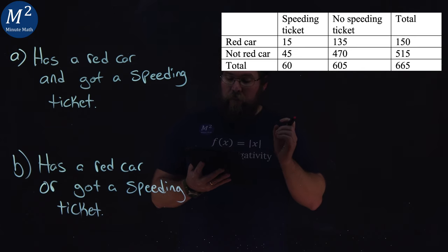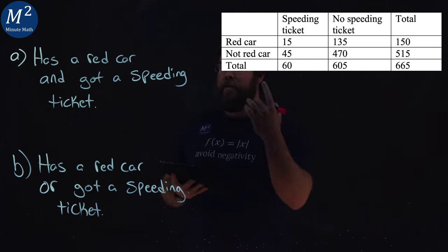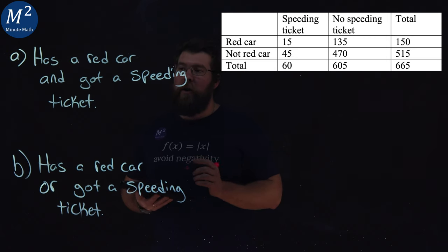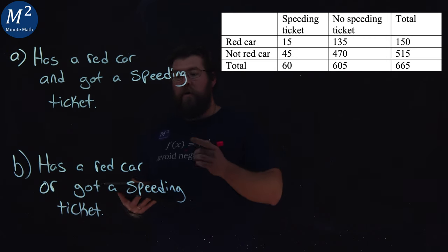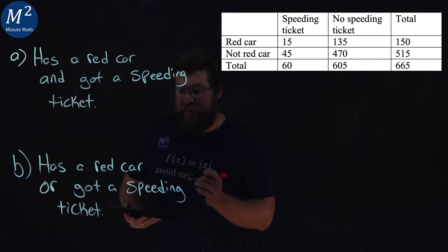Find the probability that a randomly chosen person: A, has a red car and got a speeding ticket; B, has a red car or got a speeding ticket.